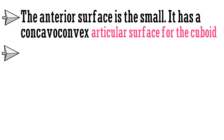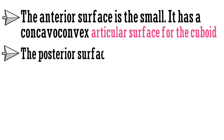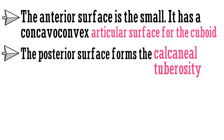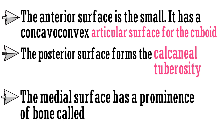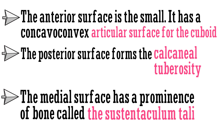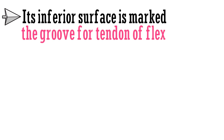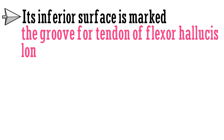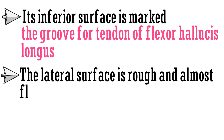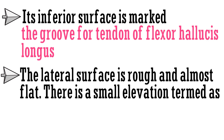The posterior surface forms the calcaneal tuberosity. The medial surface has a prominence of bone called the sustentaculum tali. Its inferior surface is marked by the groove for the tendon of flexor hallucis longus. The lateral surface is rough and almost flat, with a small elevation termed the fibular trochlea.